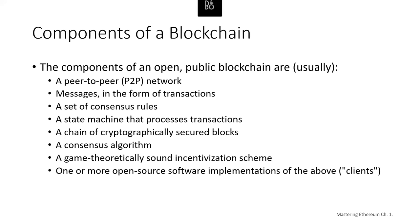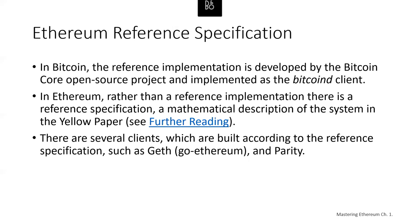And one or more open source software implementations of the above, which would be clients you could run to participate in the blockchain. All or most of these components are usually combined in a single software client. For example, in Bitcoin, the reference implementation is developed by the Bitcoin Core open source project and implemented as the Bitcoin D client. In Ethereum, rather than a reference implementation, there's a reference specification — a mathematical description of the system in the Ethereum Yellow Paper. There are a number of clients built according to the reference specification, including clients like Geth, the Go Ethereum client, and the Parity client.